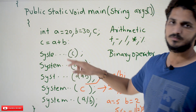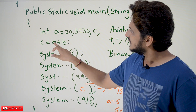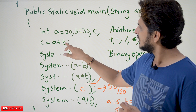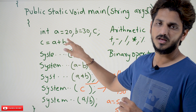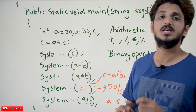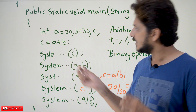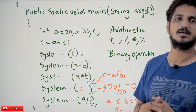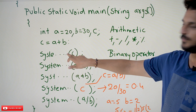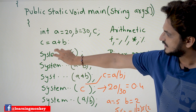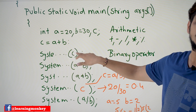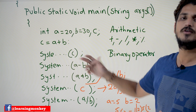The operator plus is applied between 2 operands, so we call it a binary operator. That's why arithmetic operators are binary operators. c is equal to a plus b — what happens here? Get the value of a, which is 20, and the value of b, which is 30. 20 plus 30 is 50. After doing addition, that result is placed in c. If you display System.out.println of c, you are going to get 50.